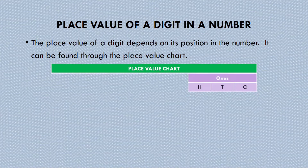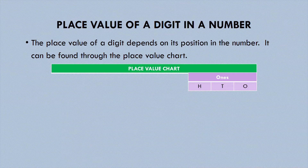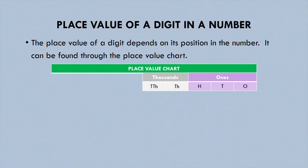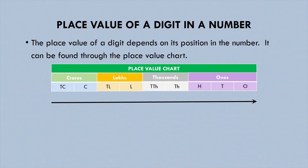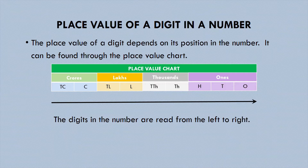The place value chart of a nine-digit number is as below: ones, tens, hundreds from the ones place; thousands and ten thousands from the thousands place; lakh and ten lakh from the lakhs place; and crores and ten crores from the crores place. Each period is separated by commas.